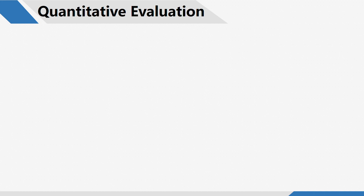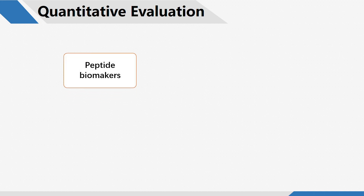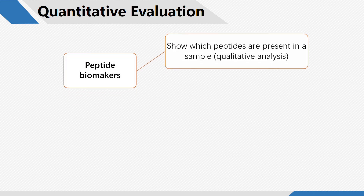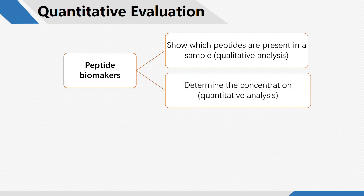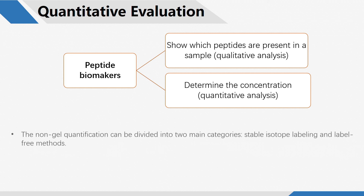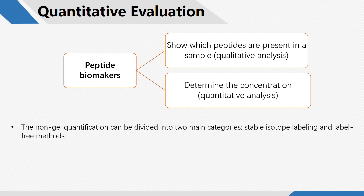A detection system for peptide biomarkers has two tasks: one is to show which peptides are present in a sample, and the other is to determine the concentration. With the development of mass spectrometry, there are various techniques for gel-free quantitative analyses of peptidomics samples. The non-gel quantification can be divided into two main categories: stable isotope labeling and label-free methods.